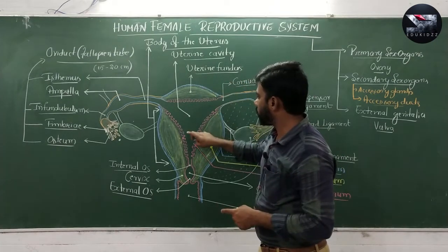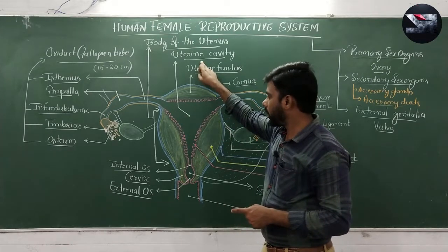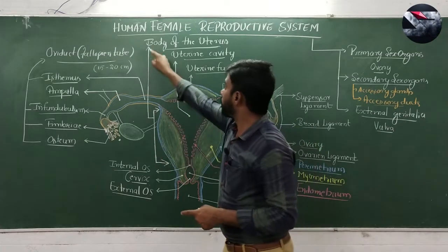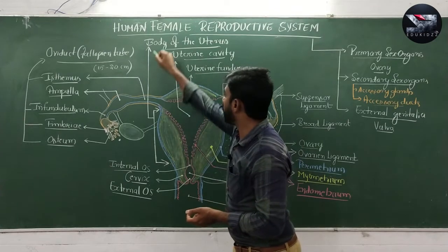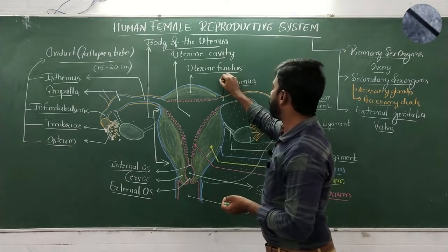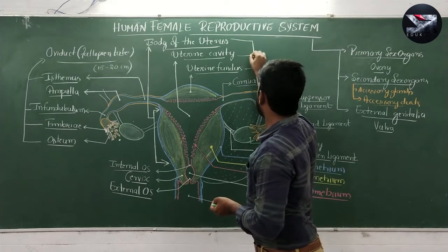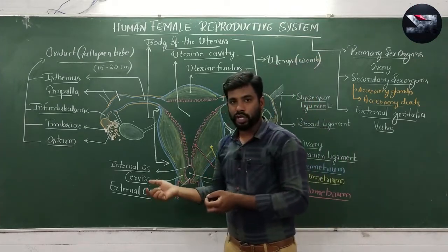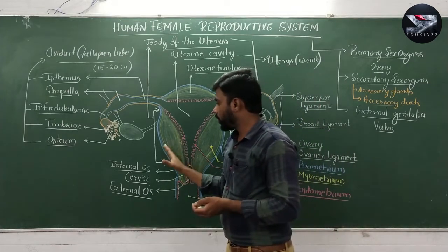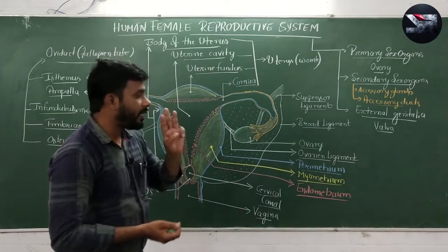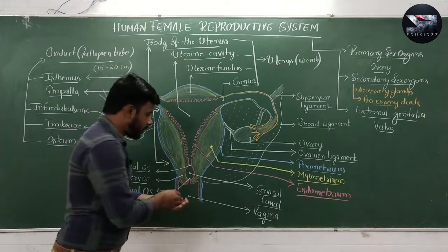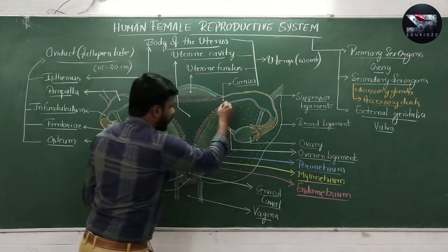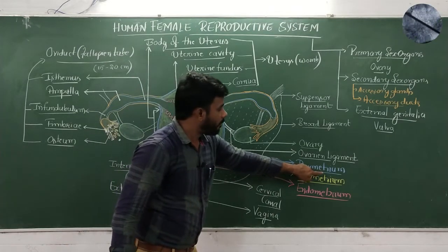The uterus encloses a cavity called the uterine cavity. The uterus, also called the womb, is inverted pear-shaped. It is made up of three layers. The outermost layer is thin and is called the perimetrium — it is actually a peritoneum layer and is protective in nature.